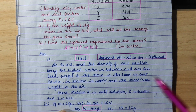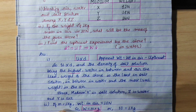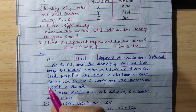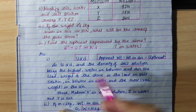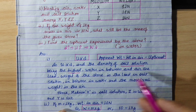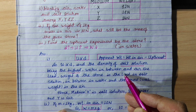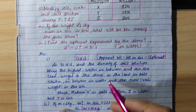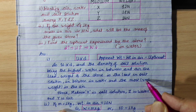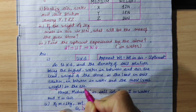Salt solution ko density is the highest, fresh water (saada paani) is in between, and air (haawa) has the least density. Therefore, weight of stone is least in salt solution because there is the greatest upthrust. It is in between in water, and the most — the real weight — is shown in air.